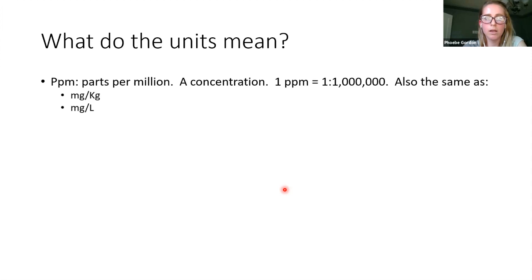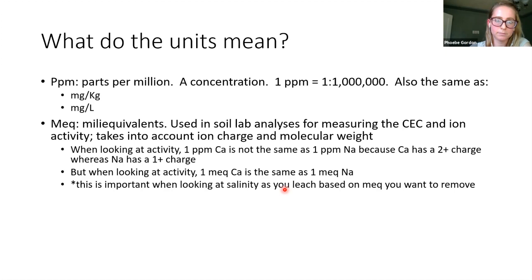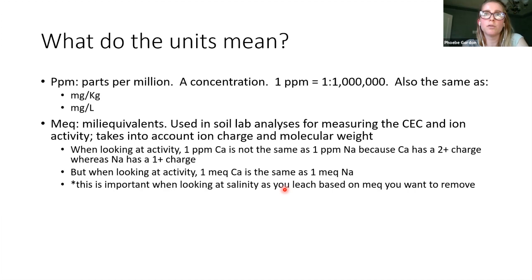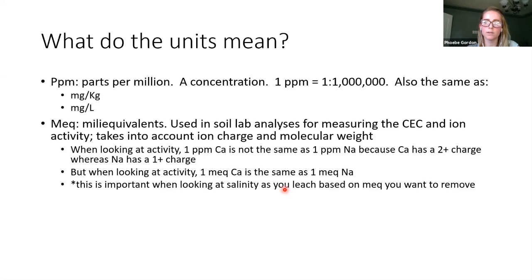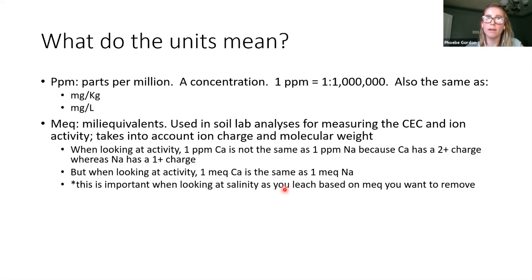Going over units you might see on a soil test: parts per million is a concentration—the same as milligrams per kilogram or milligrams per liter. Milliequivalents are used for looking at the cation exchange capacity as well as in water and saturated paste extracts reported as milliequivalents per liter. Milliequivalents take into account the charge of a cation or anion as well as the size—for example, something with a plus-one charge like sodium is not going to have the same activity as something with a plus-two charge like calcium.